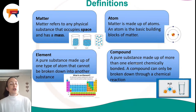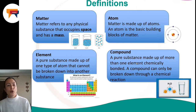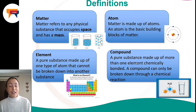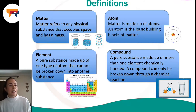Let's first go through a few of the definitions that are important to know for this section. The first one is matter. The word matter in science refers to any physical substance that occupies space and has a mass. Anything around you that you can see is made up of matter. You get different states of matter — solid, liquid, and gas — and different items can move between these different states of matter.